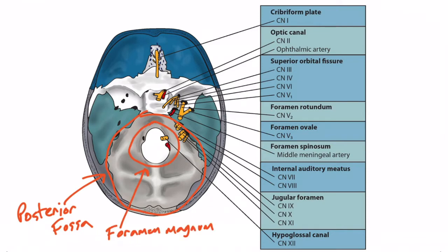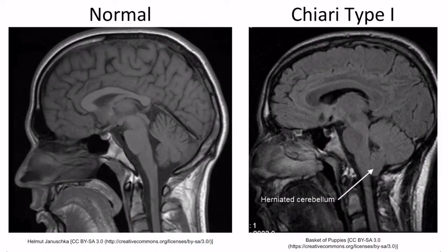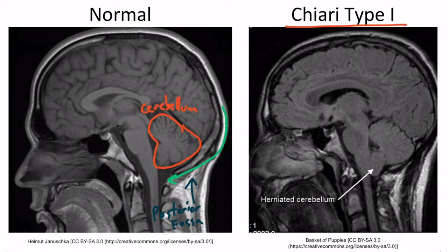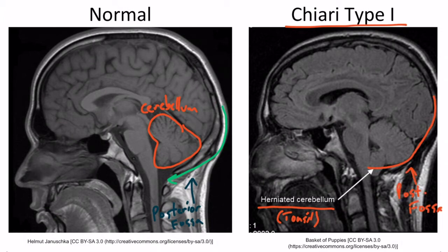In Chiari type one malformations, one of the two tonsils will protrude through the foramen magnum. This image depicts the base of the skull with the posterior fossa back here. You can see the foramen magnum, and the cerebellum should be posterior to this edge; however, one of the tonsils will slide down and be inferior to it. The left MRI image shows a normal brain with the cerebellum safely tucked in the posterior fossa, while the right image shows Chiari type one with a herniated cerebellar tonsil protruding below.